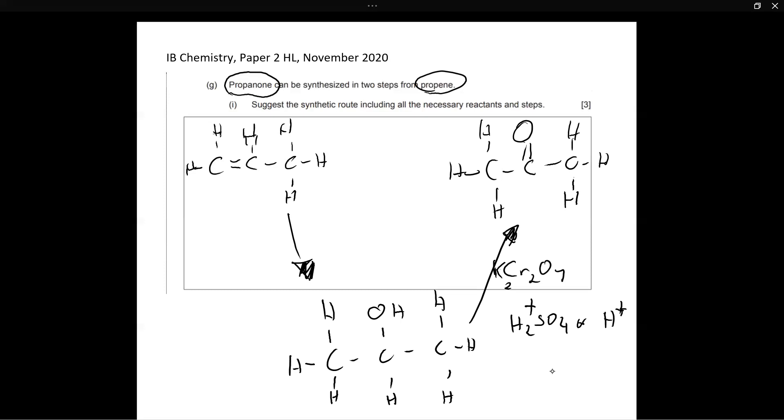The reaction is called catalytic hydration, or you may just know it as hydration. And as you can probably tell from the name hydration, we basically add water to this. And we also need a catalyst to make the reaction more spontaneous to make it faster. And that catalyst is usually concentrated sulfuric acid, or you can just write H plus if that's what you want.